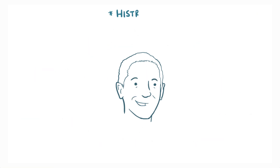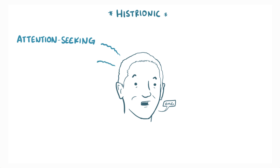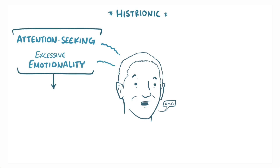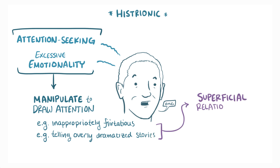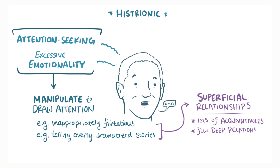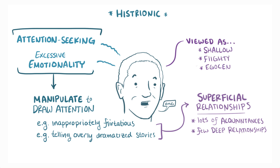Next there's Histrionic Personality Disorder, where the key feature is attention-seeking and excessive emotionality, which sometimes leads them to manipulate a situation to draw more attention to themselves. For example, they might act inappropriately flirtatious or tell overly dramatized stories to remain the center of attention. These behaviors result in superficial relationships with lots of acquaintances but few, if any, deep connections with good friends, because people tend to view them as shallow, flighty, and egocentric.